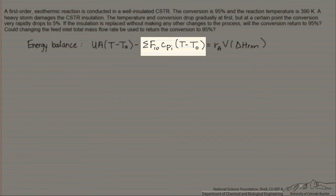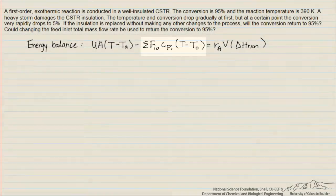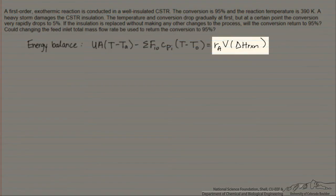We have the convective term that brings heat in and takes heat away in terms of the heat capacities of the components. And then we have the term that comes from a reaction, where the rate with which we consume A times the heat of reaction for our component A times the volume will tell us the total amount of heat that is generated in this reaction.